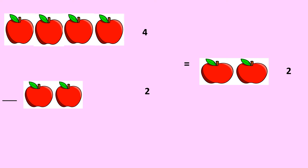Now children, I have taken one more example for your understanding. Here you can see four apples — one, two, three, four. I have written four over here. Here you can see two apples — one, two — and I have written two over here. This is the minus sign, a small sleeping line. Out of four apples, I have to take out two apples. So I have taken out two apples — one apple and two apples. So how many apples am I left with? One, two. Answer will be two. I am left with two apples.